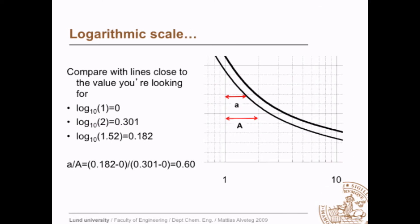So how to find 1.52? Well, the logarithm of 1.52 is 0.182, and we can compare with the lines that are closest. So this is the line for 1 and that's the line for 2. Let's take the logarithm of those: logarithm of 1 is 0 and logarithm of 2 is 0.301.